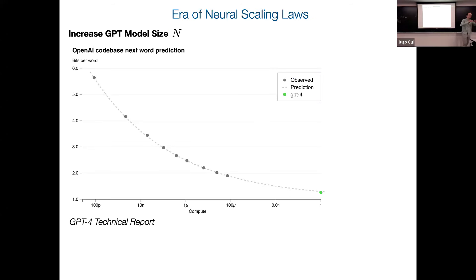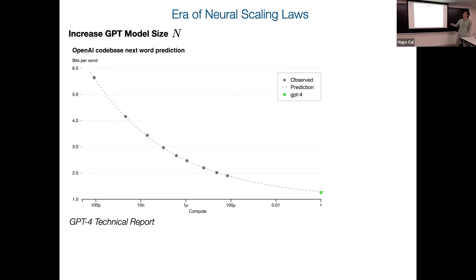We live in this era where people just keep training larger and larger transformers. Performance seems to get better and better as a function of compute. This plot is from the GPT-4 technical report from OpenAI. They're a little cagey about exact details, but what they're basically trying to convey is they can train a lot of small models for some number of steps, look at the cross-entropy loss for next token prediction as a function of model size, and then predict ahead of time to very high accuracy what the performance of a larger model should be.